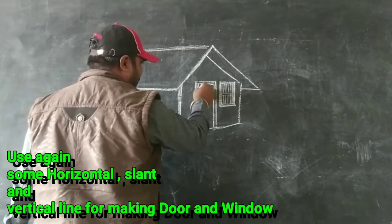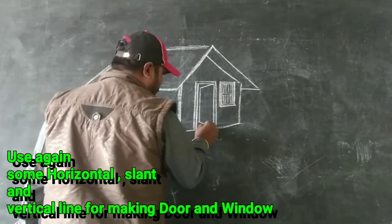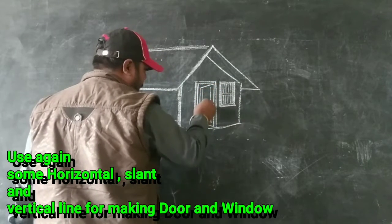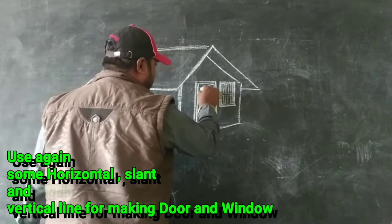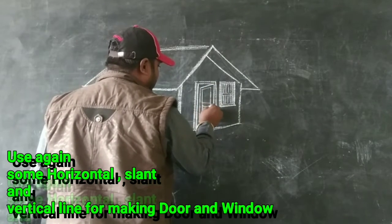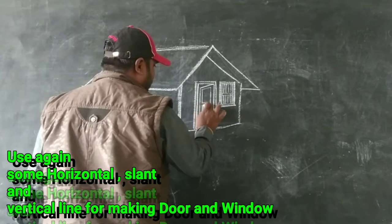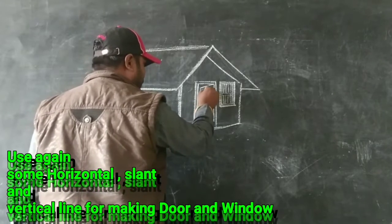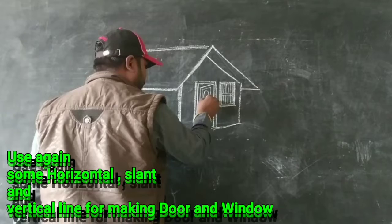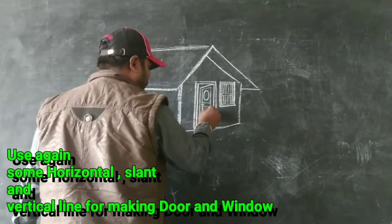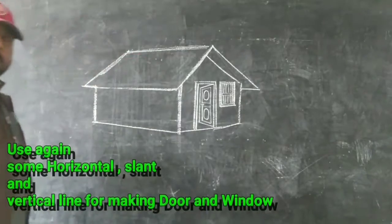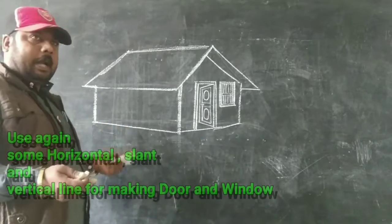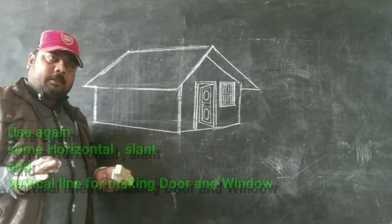Give one flat line here, then one vertical line, then one flat line. Now bring like this from the line, through the line, like this. Now you can do it. So we have used only line in this for making the house, and it has become good.